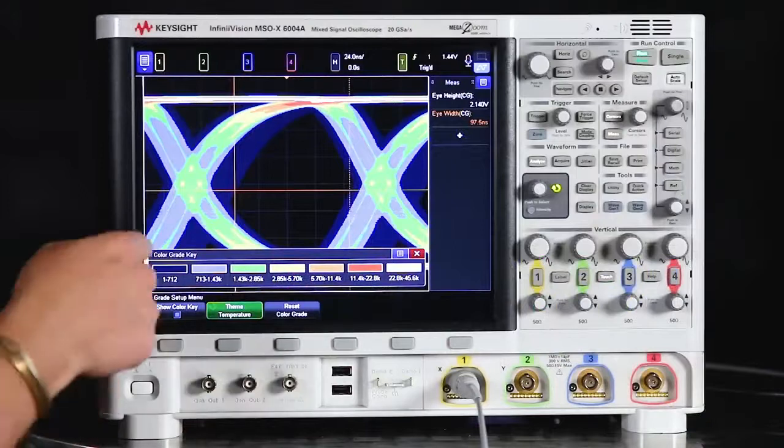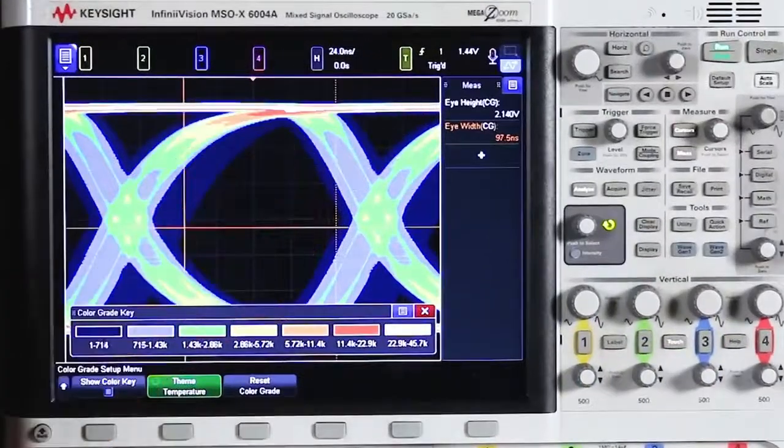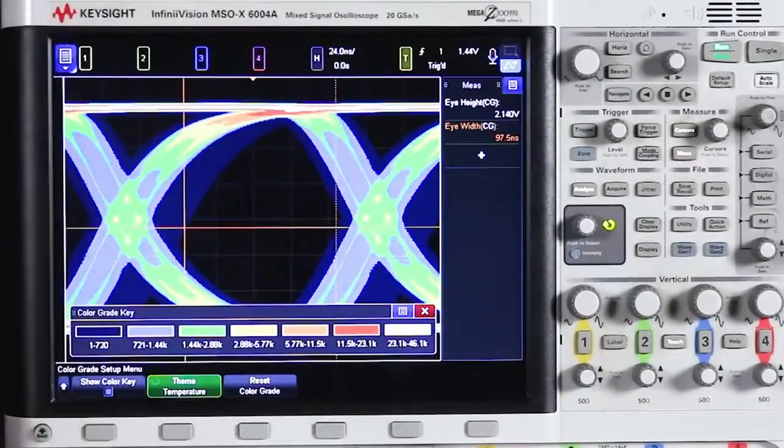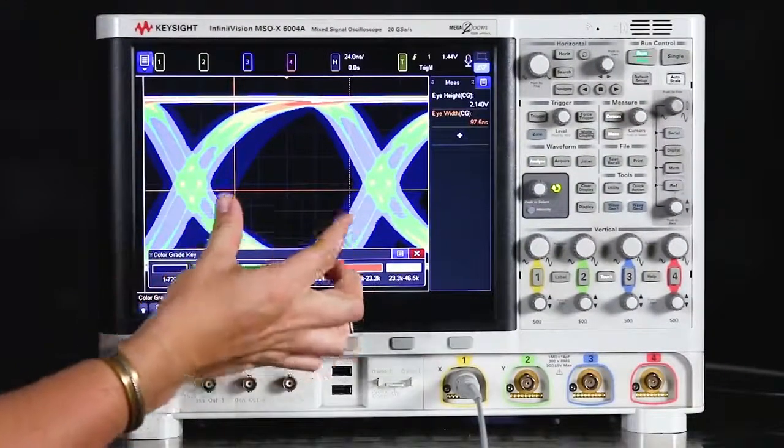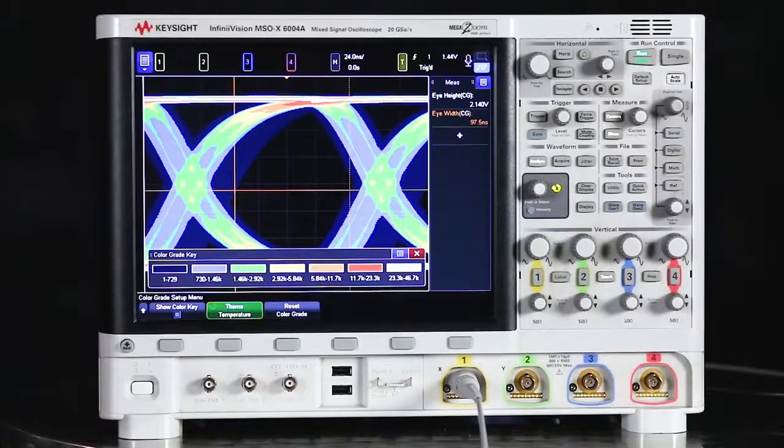Notice when we opened up the eye diagram, we got two custom measurements that popped up in the sidebar, the eye height and the eye width. So this shows you the largest amplitude and the widest opening of the eye. And you can verify and compare that with your specifications for the signal and debug if you aren't seeing what you expected to.